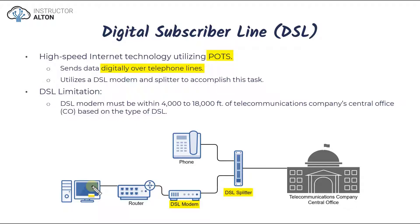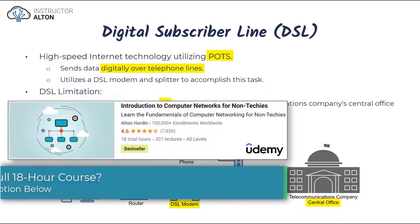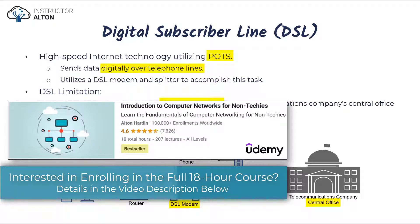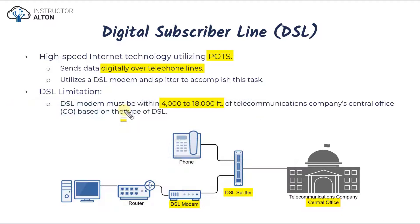The great thing about DSL is that we can utilize both our internet and our phone line at the same time — something we couldn't do with dial-up. There is a limitation with DSL: your telecommunication company's central office has to be somewhere within 4,000 to 18,000 feet of your home. The distance varies based upon the type of DSL you're purchasing, and we're going to talk about three common types on the next slide.